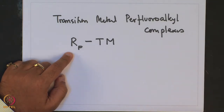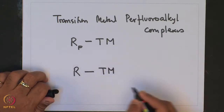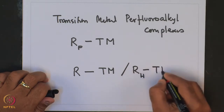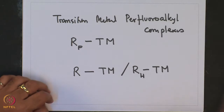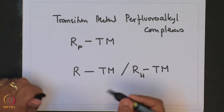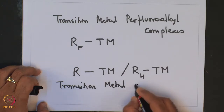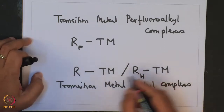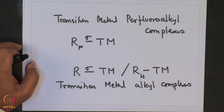These compounds bear analogy to simple Transition Metal Alkyl Complexes, which are also given by R-TM, where R is an alkyl group. One may also represent these as RH-TM, where all the alkyls have hydrogen substituents, to be more precise. Both of these types make sigma-type bonds with the transition metal.